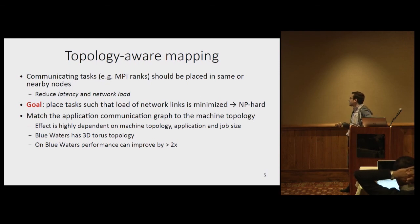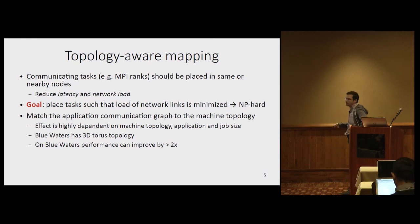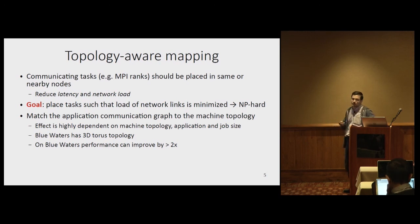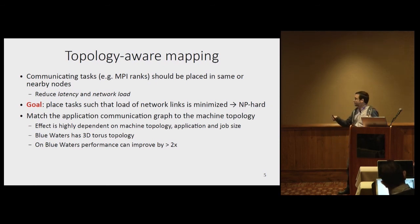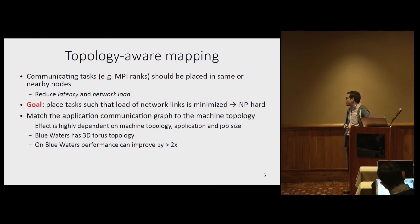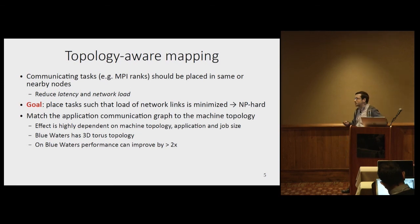The basic idea is to match the application communication graph to the actual machine topology. The effect is highly dependent on your application, job size, and network topology. On Blue Waters, which has a 3D torus topology, topology-aware mapping matters a lot because there can be many hops between two arbitrary processes. Even with high bandwidth, if tasks are not placed correctly you get very long paths, and a large number of long paths leads to network contention. Placing ranks smartly can improve communication significantly, especially on large jobs.